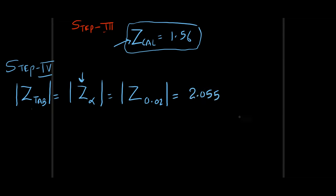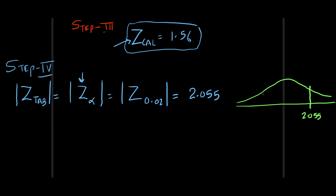Immediately draw the standard normal curve. Since it is right-tailed, mark 2.055 on the right side. If it were left-tailed, mark on the left side. If two-tailed, mark on both tails. Write 'accept' in the middle region and 'reject' on the tail. Reject will always be on the tail.